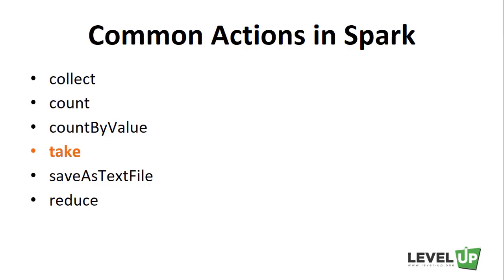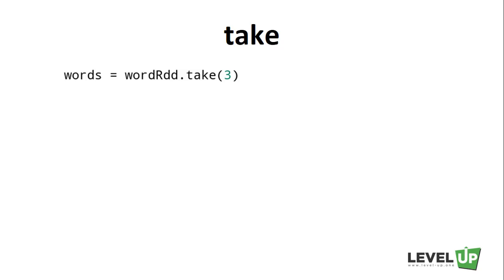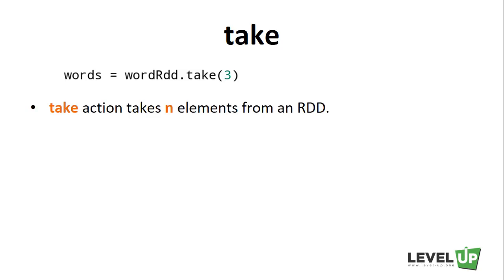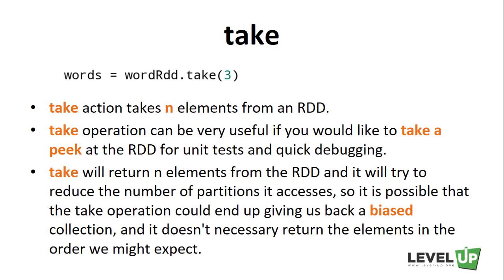Next, we talk about the take action. Take action takes N elements from the RDD. This operation can be very useful if we would like to take a peek at the RDD for unit tests and quick debugging — for example, taking the first three rows and printing them to the console. Take will return N elements from the RDD, and it tries to reduce the number of partitions it accesses. So it is possible that the take operation could end up giving us back a biased collection, and it doesn't necessarily return elements in the order we might expect.